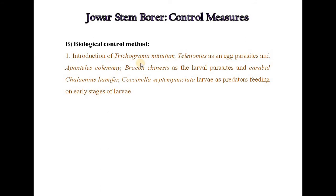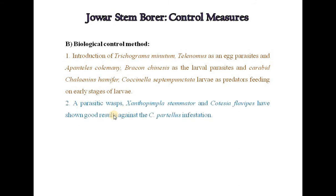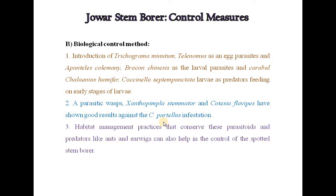For biological control, introduction of Trichogramma as an egg parasite, Apanteles braconid as a larval parasite, and carabid and coccinella larvae as predators feeding on early stages of larvae. Parasitic wasps Xanthopimpla and Carcelia have shown good results against Chilo partellus infestation. Habitat management practices that conserve these parasitoids and predators like ants can also help in the control of spotted stem borer.